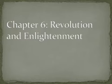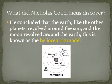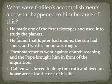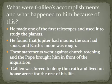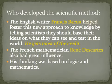Chapter six covers the Scientific Revolution, the Enlightenment, and the American Revolution. Nicholas Copernicus discovered the heliocentric model — the sun-centered universe — but was afraid to publish it because the Catholic Church would attack him, so he waited until he was dying to have it published. Galileo made one of the first telescopes, discovered Jupiter had moons, the sun had dark spots, and Earth's moon was rough. These statements went against Church teachings, so the Pope brought him before the Inquisition, where he was forced to deny his findings and lived under house arrest for the rest of his life.